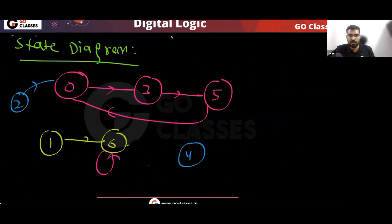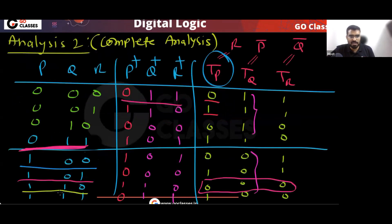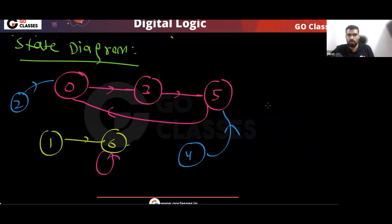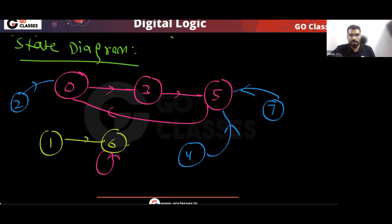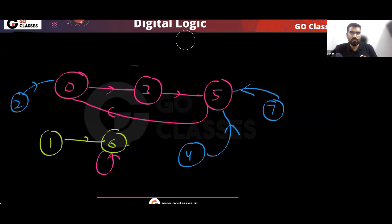From 4 you are going to 5, and from 7 you are also going to 5. This is the type of counter you got. Now what is the modulus of this counter?